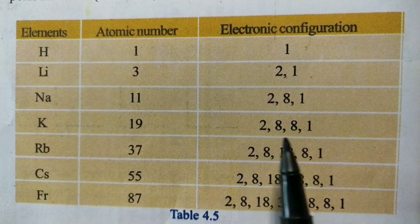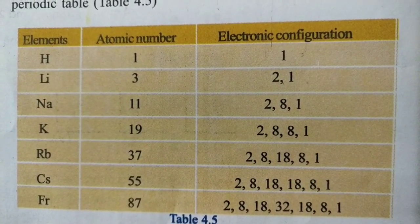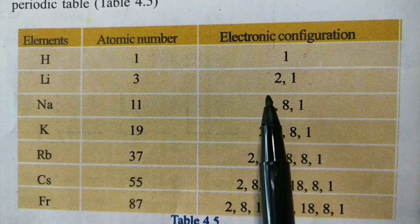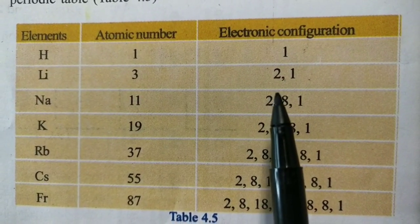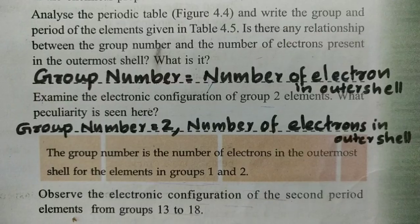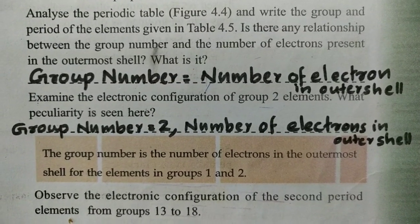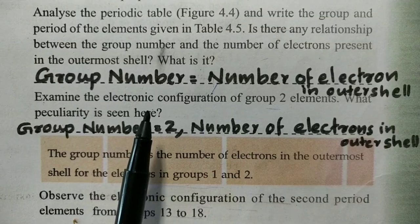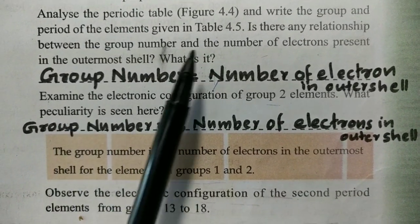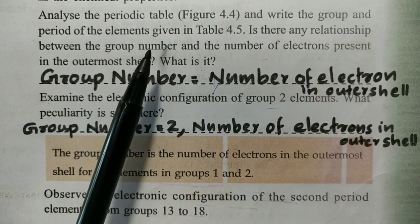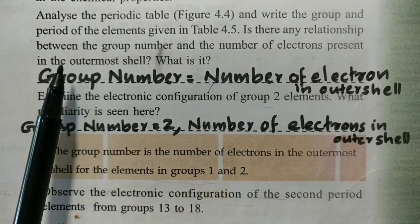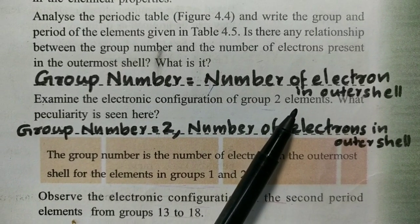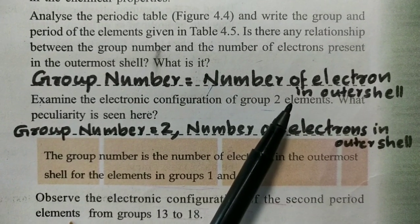Group number is equal to number of electrons in the outermost shell. Period number is equal to number of shells. I am going to show you — it is very important. To cut all the shells, to make the shells — you can see the shells.